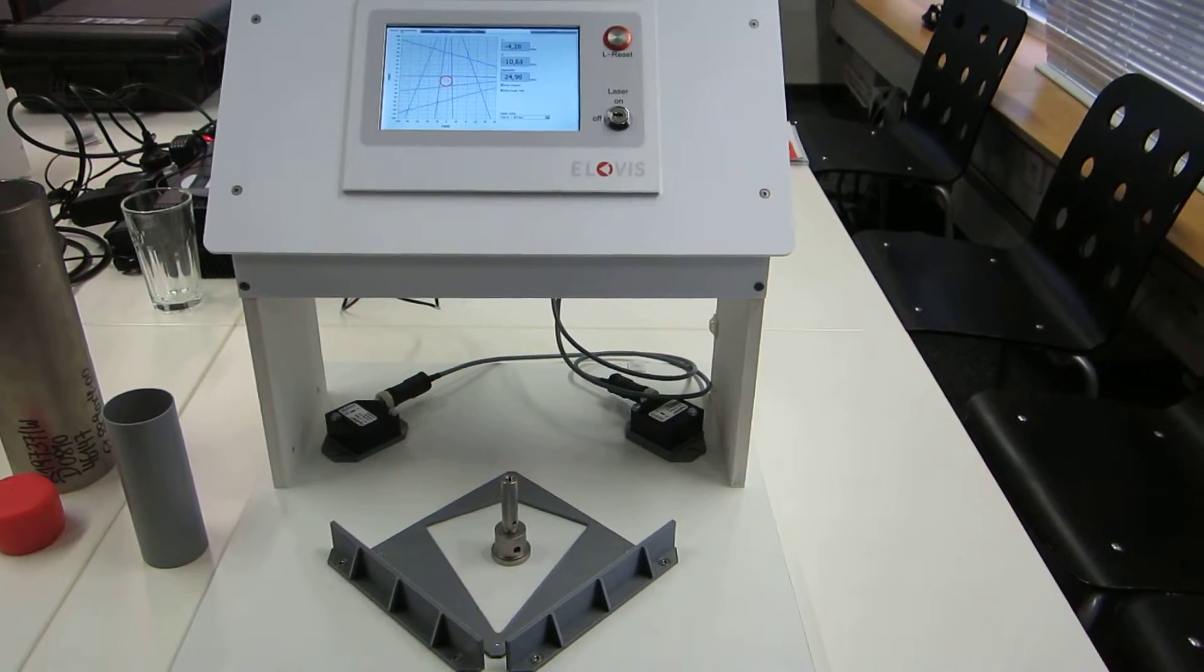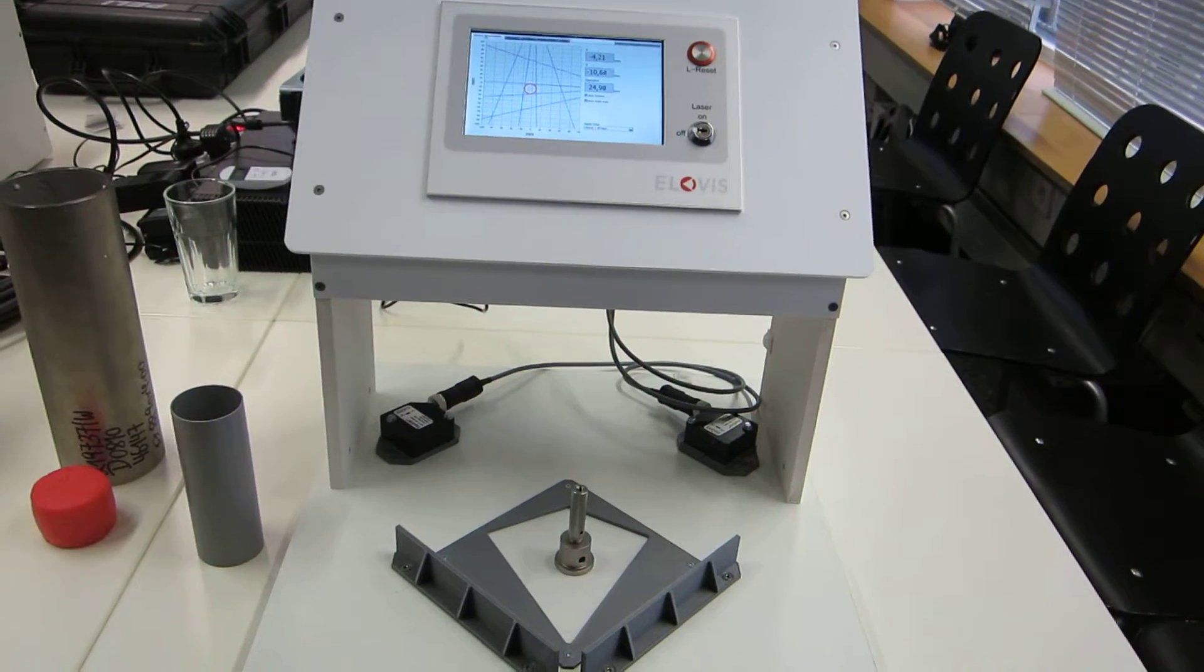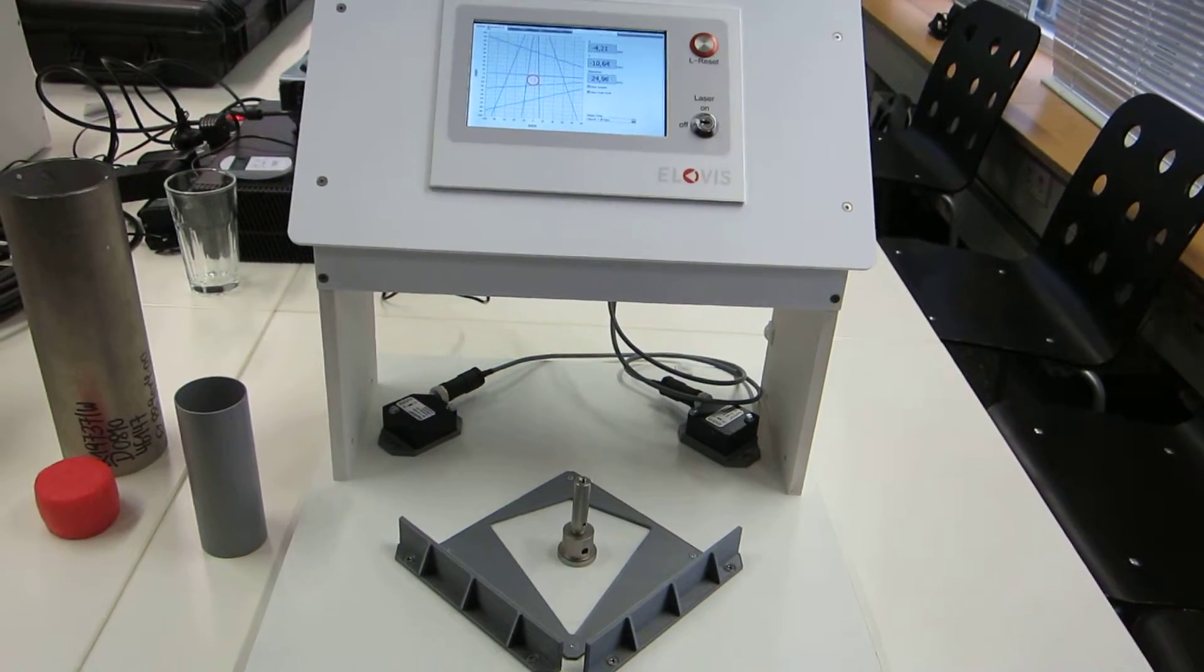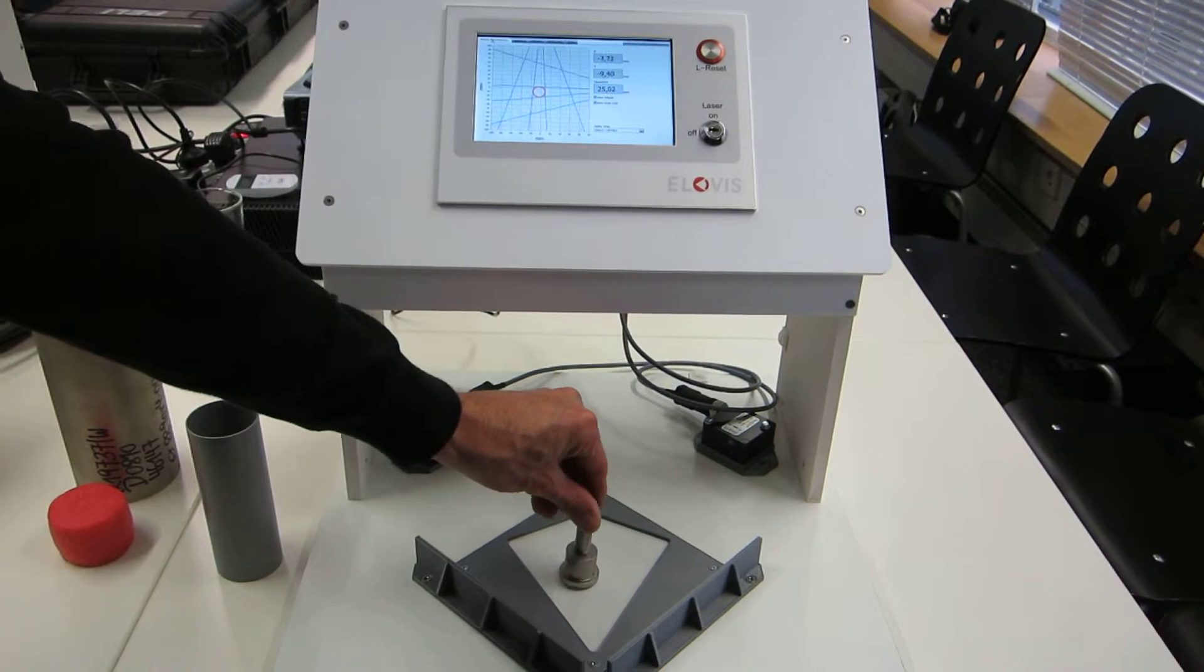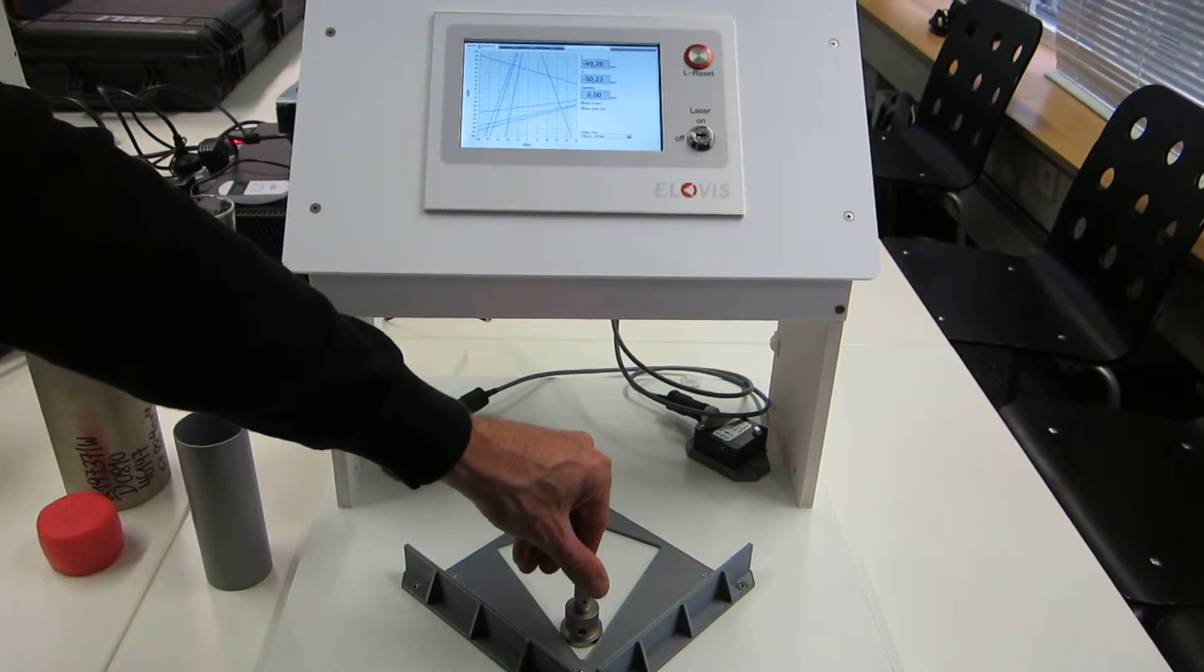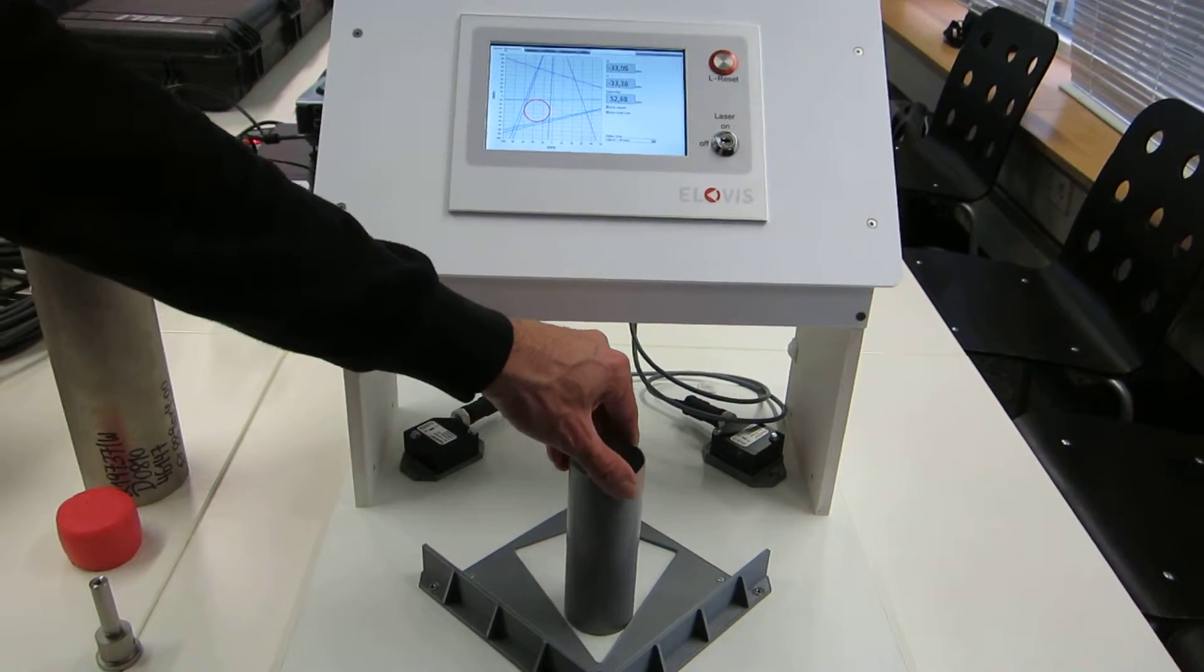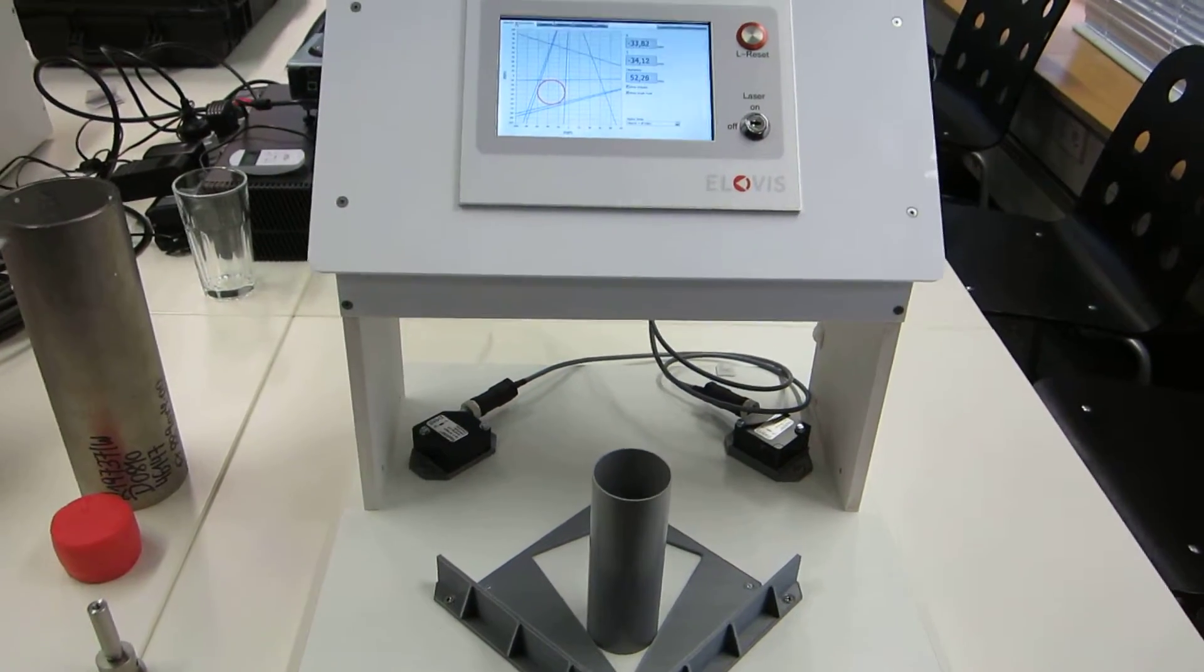Edge Sense measures the dimensions and compares it to the target values of the set tolerances. Measurement dimensions are for example diameter and roundness, width and height.